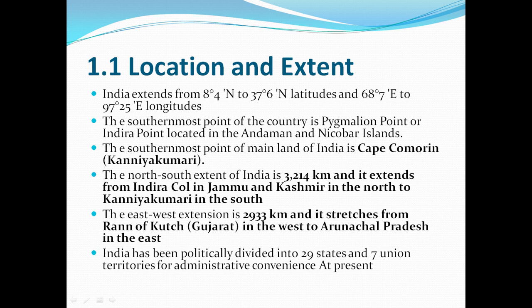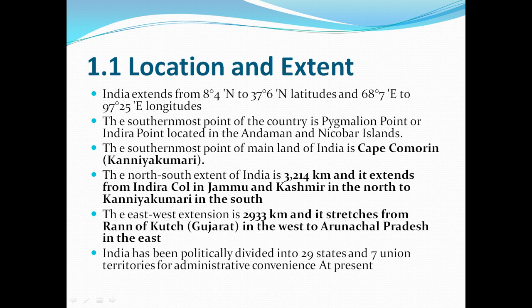Location and extent: India extends from 8 degrees 4 minutes north to 37 degrees 6 minutes north in latitude, and from 68 degrees 7 minutes east to 97 degrees 25 minutes east in longitude. Latitudes are imaginary lines that run parallel across the globe, and longitudes are vertical imaginary lines. With the help of these, India's location and extent are calculated.